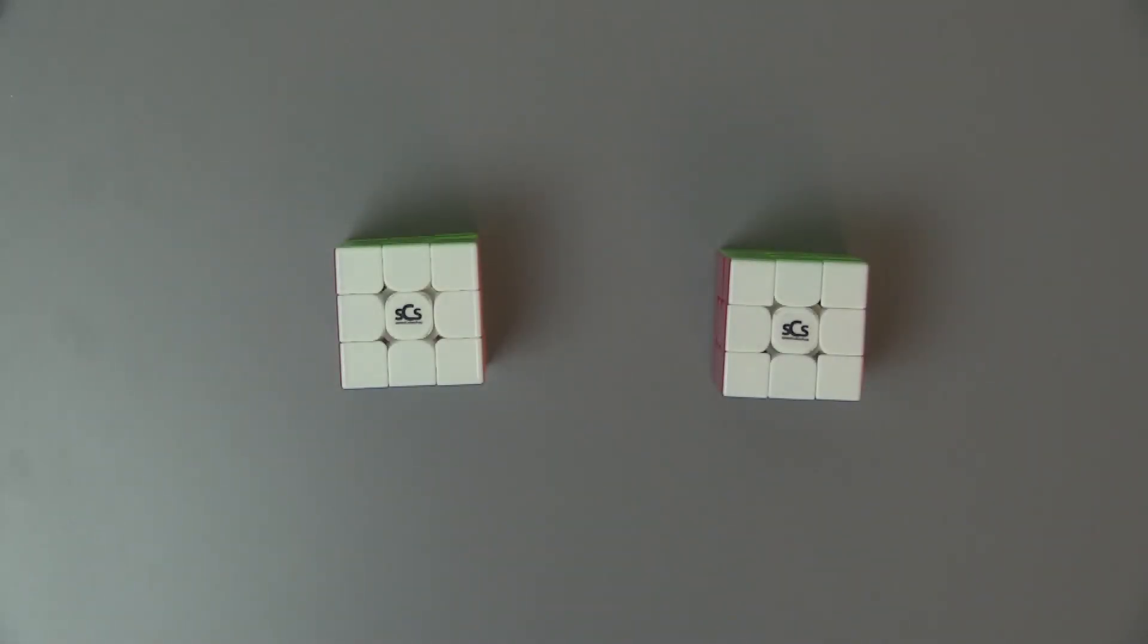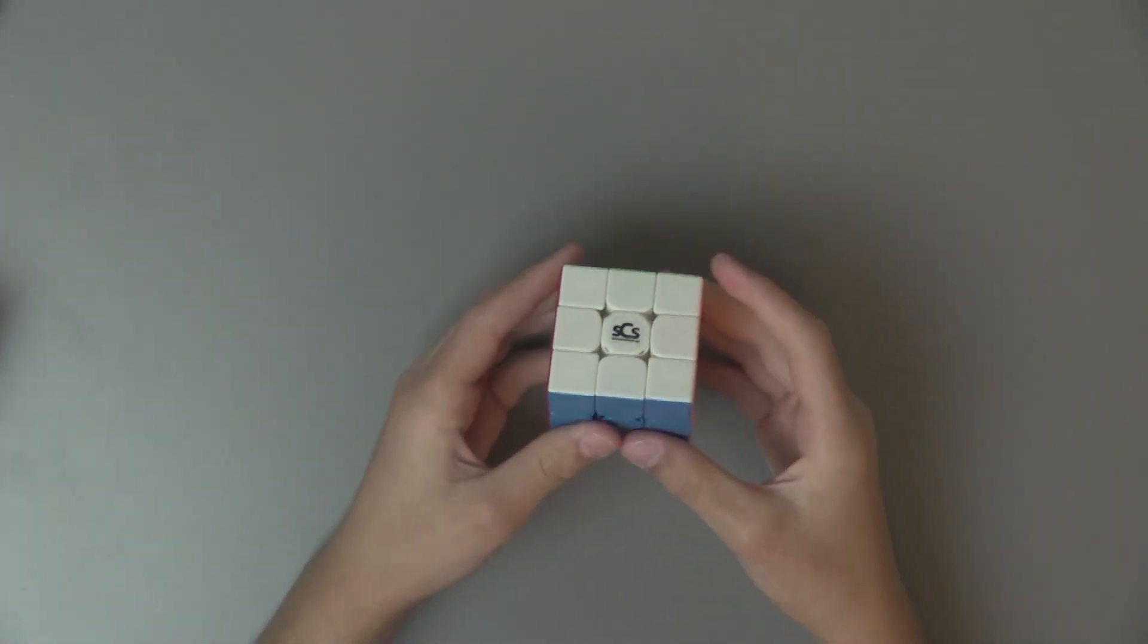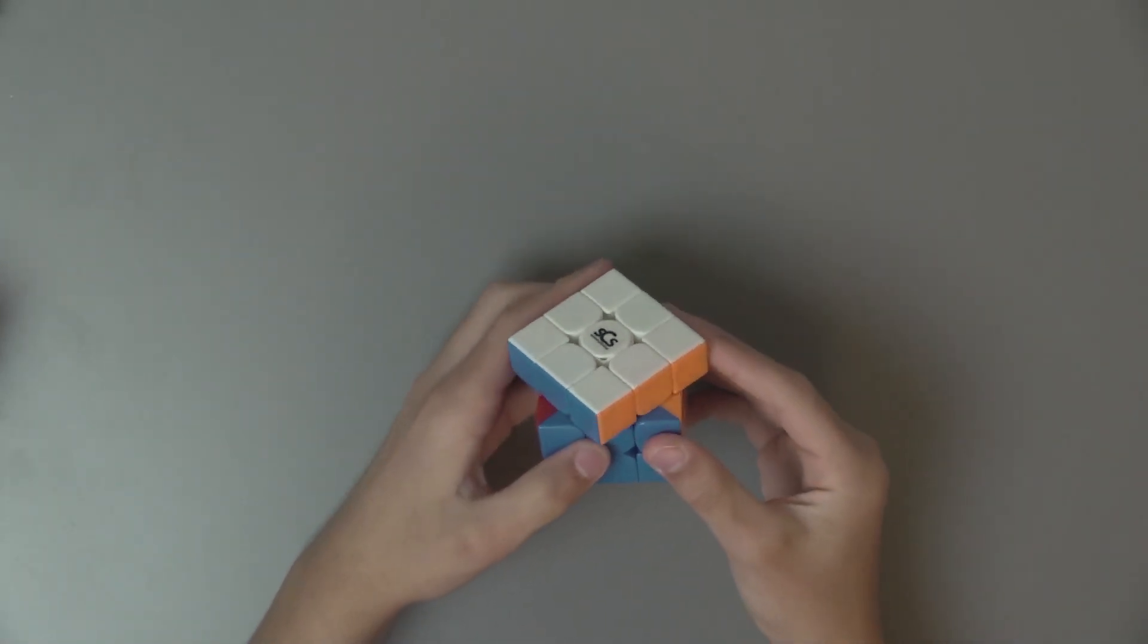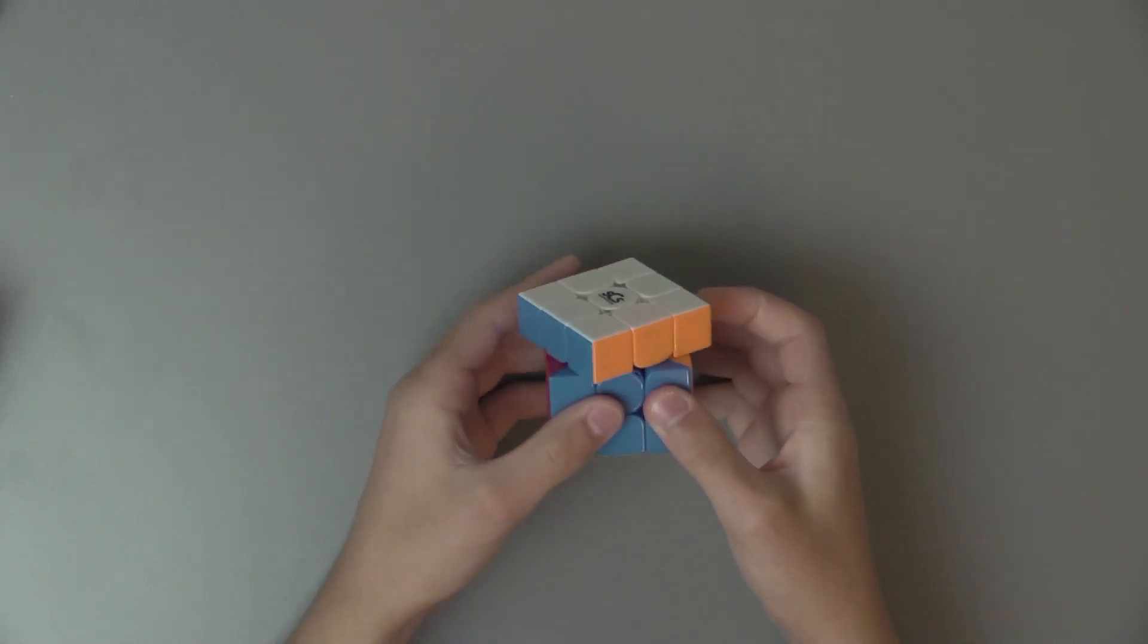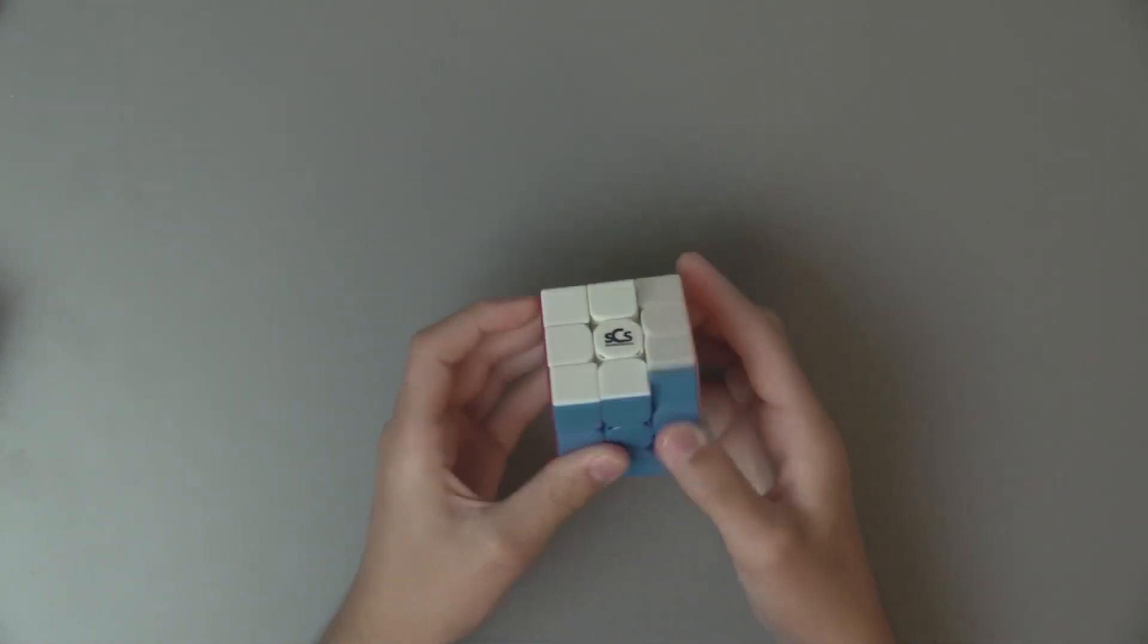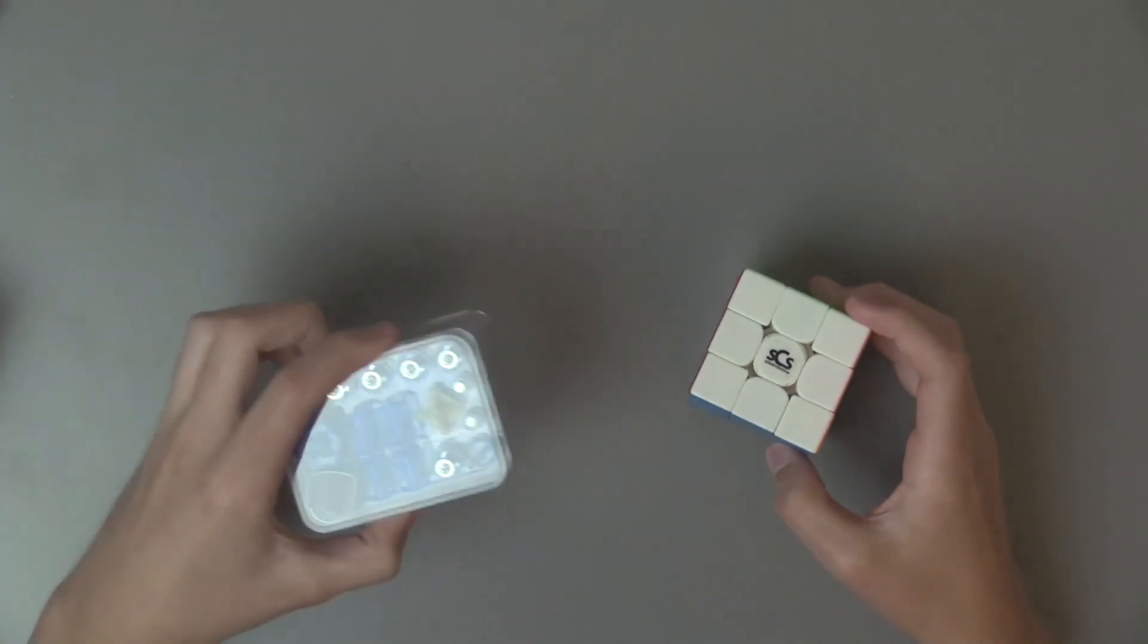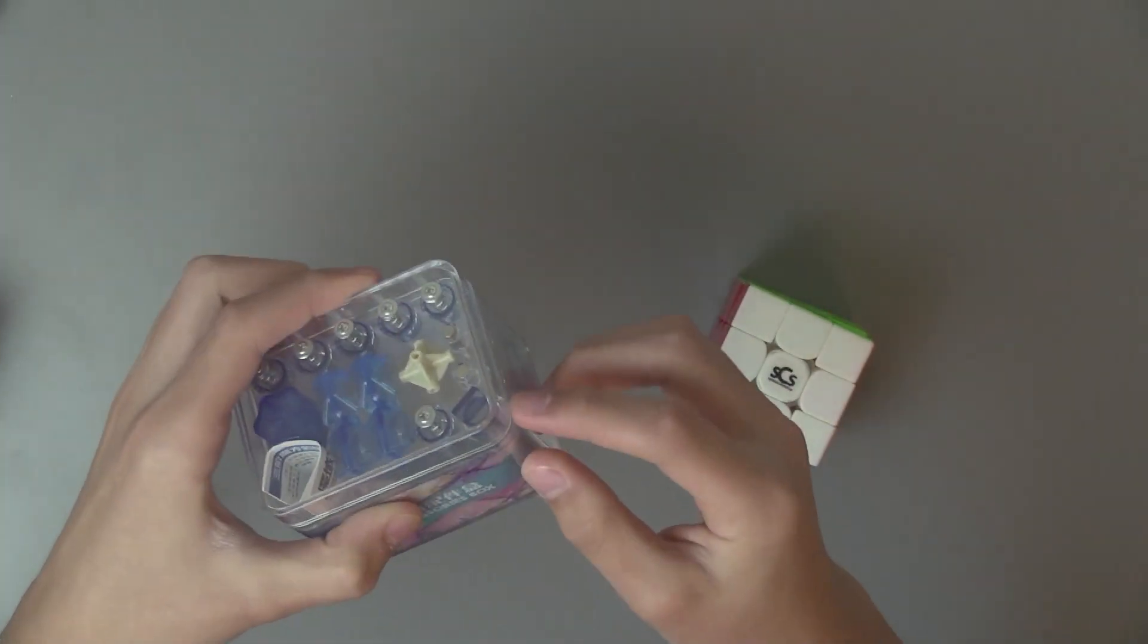So next up, out of the box. Out of the box, the Weylong WRM was extremely tight, and you could tell it was pretty dry. So after I loosened it a bit, the corner cutting got much better.